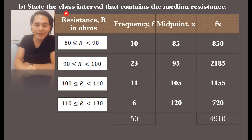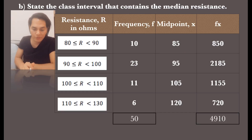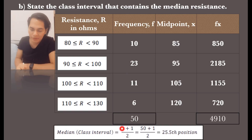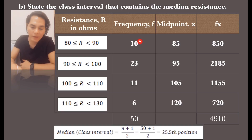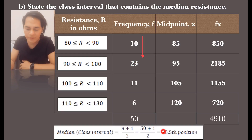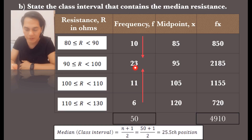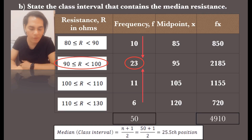Next, state the class interval that contains the median resistance. To find the median position, use (n+1)/2: (50+1)/2 = 25.5. Looking at the frequency column, 10+23 = 33, and before reaching 33 we pass through position 25.5. Alternatively, adding from the other end: 6+11 = 17, then 17+23 = 40, and before reaching 40 we have position 25.5. Therefore, the median interval is 90 to 100.